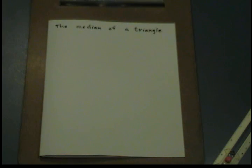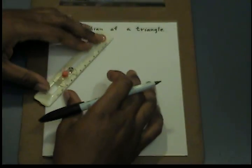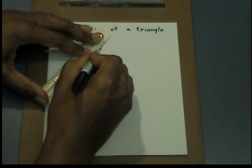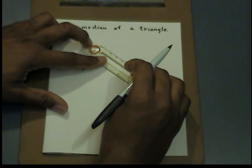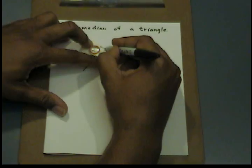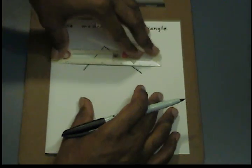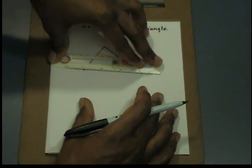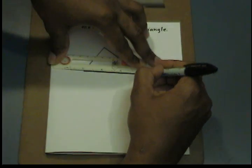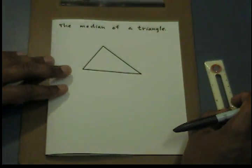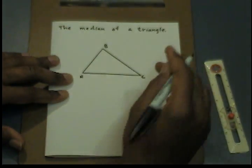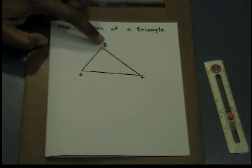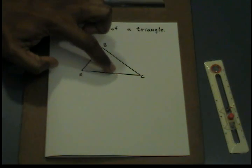Before we can start, we must first have a triangle to construct a median. So let's do that. Let's start by making a triangle. Let's label our triangle ABC. In this case, I want to use B as my vertex, and I want to draw a median to the midpoint of AC.